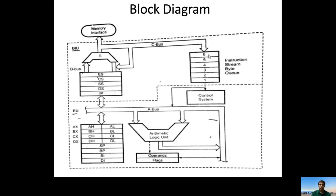The queue follows the FIFO principle — First In, First Out. The BIU fetches the first instruction and loads it into position 1, then the next instruction into position 2, position 3, and so on up to position 6. After fetching, the first instruction enters into the control system.